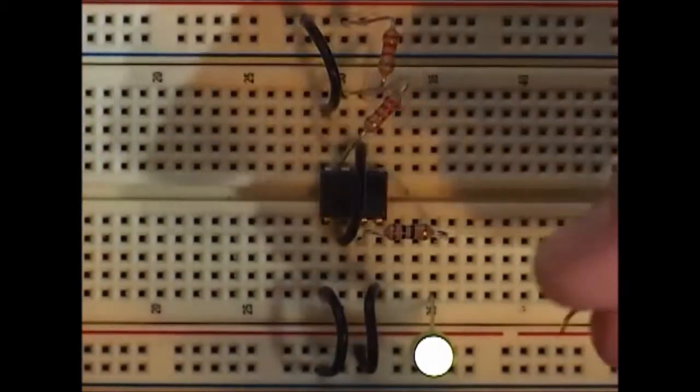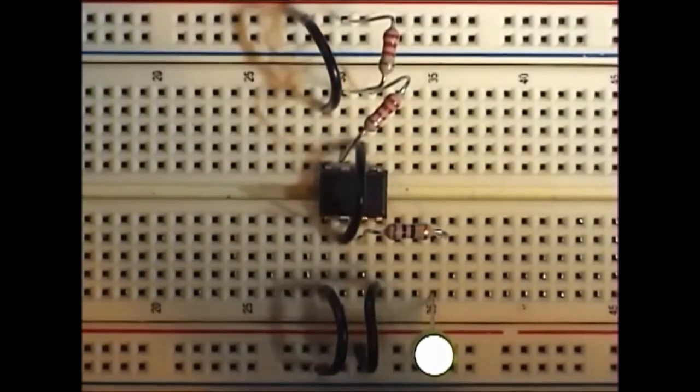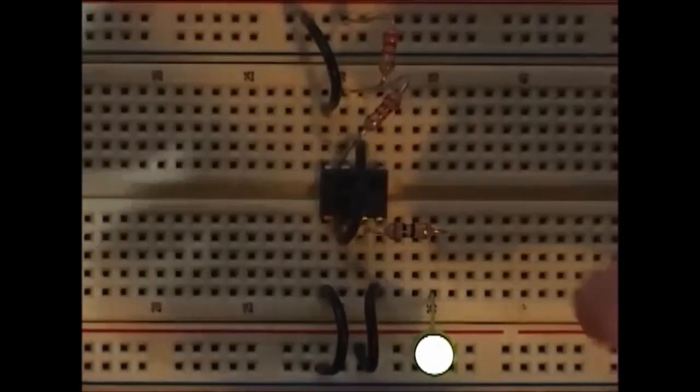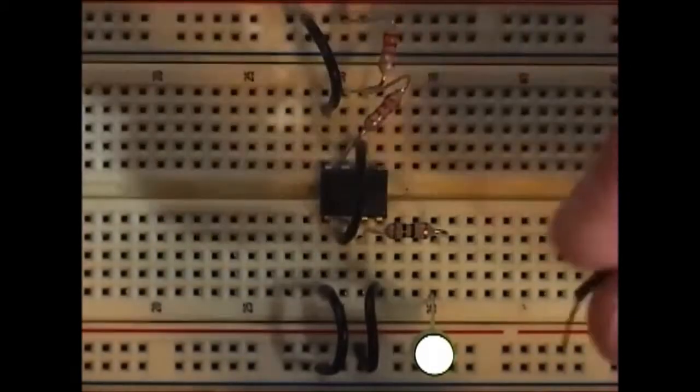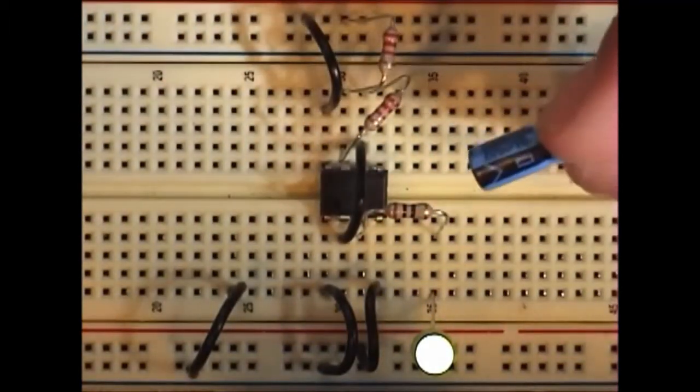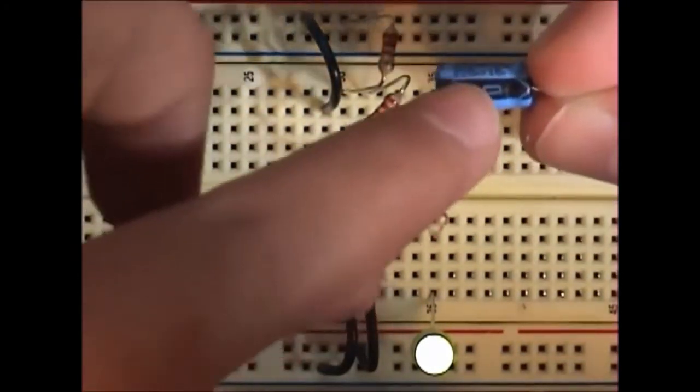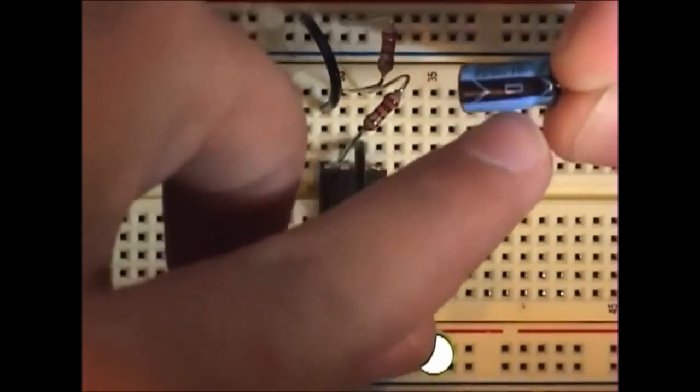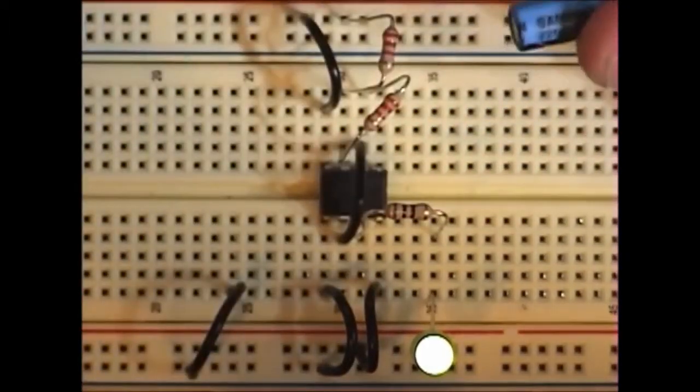And you connect the capacitor with jumpers to ground. Usually the capacitor says on it, see that negative? Usually they say on the side which side is negative, which side is positive.